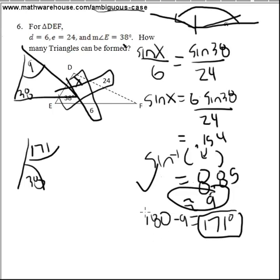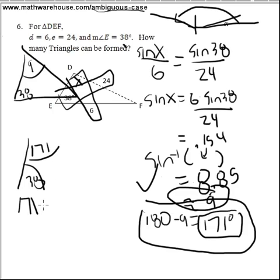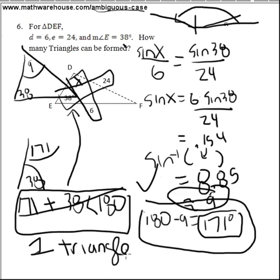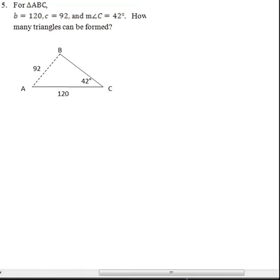So the general steps that we're going to use to solve these problems is solve it like a normal law of sines problem and get the acute angle. If this acute angle is valid, like a 9 degree angle is completely valid, we can make a triangle. Then find the angle in quadrant 2. Do 180 minus acute angle, 171. The sum of that angle, in this case 171, plus the sum of the angle that you were given in the problem, must be less than 180 degrees. Otherwise, you wouldn't be able to make a triangle. 171 plus 38 is not less than 180 degrees. Therefore, in this triangle here, there can only be one possible triangle.